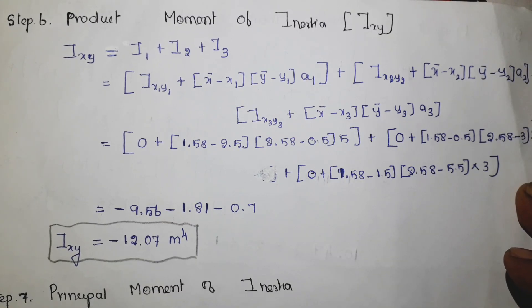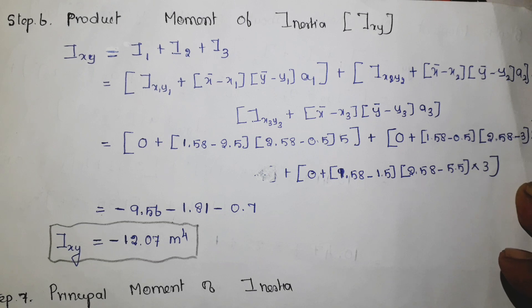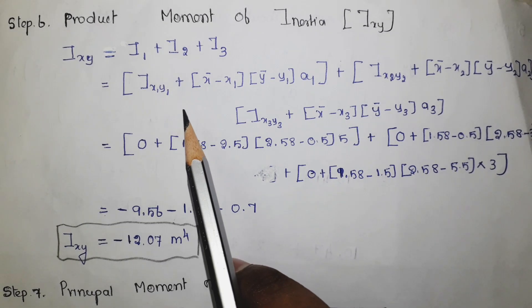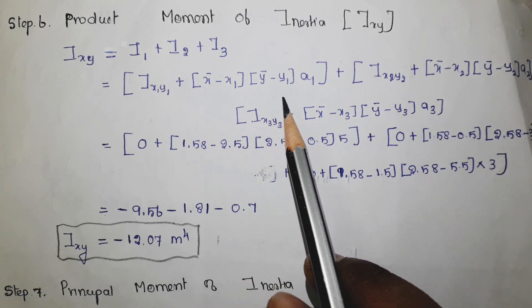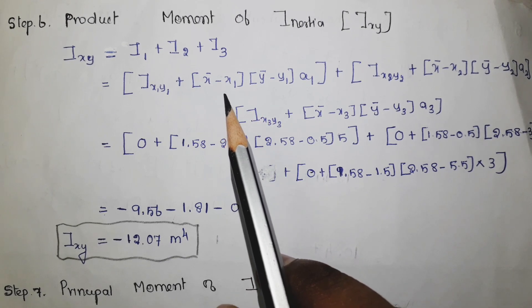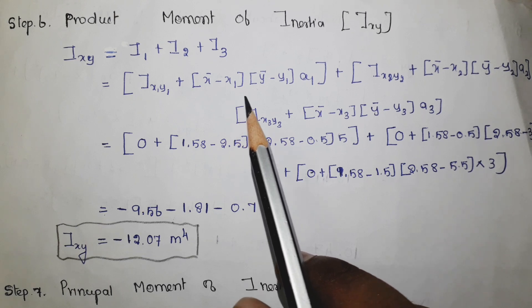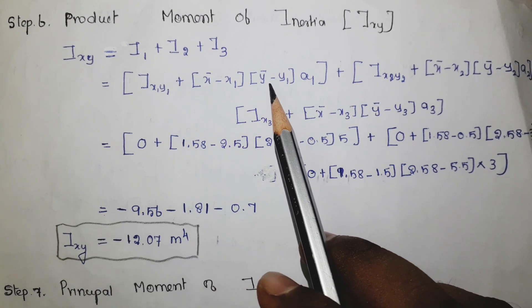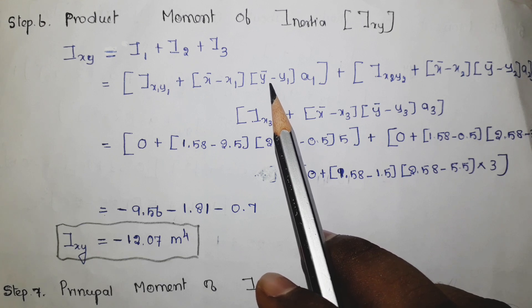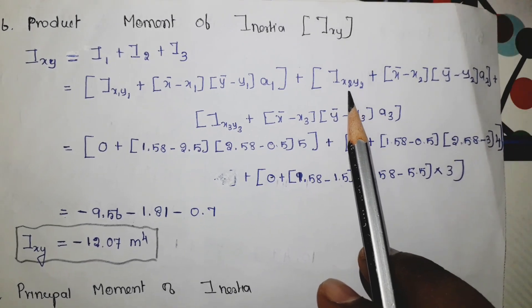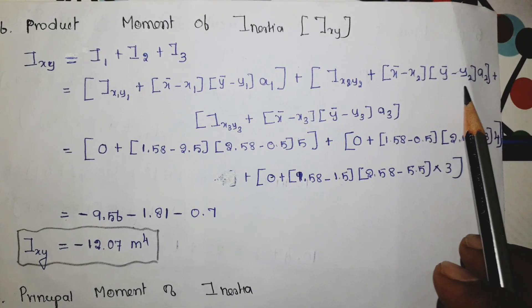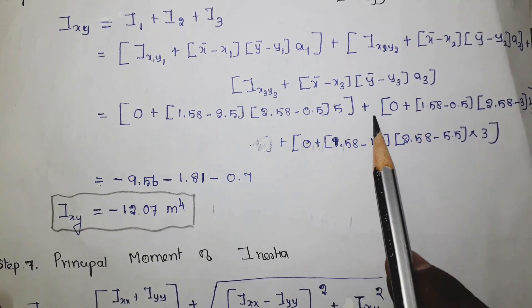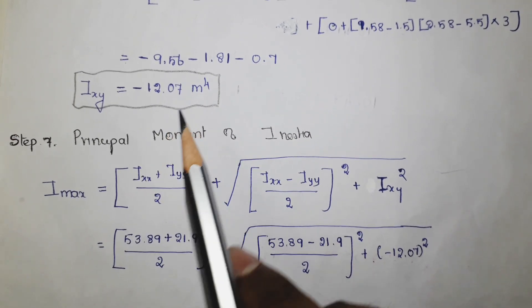Step 6 is finding the product moment of inertia about the centroidal axis. The formula is modified as Ix1y1 plus a1 into (x-bar minus x1) into (y-bar minus y1). These two distances are between capital G — the centroid of the composite section — and small g, the centroid of rectangle 1, in the y and x directions. The same is applied for the second and third rectangles with x2, y2, (x-bar minus x2), (y-bar minus y2), a2, and similarly for x3, y3. Substituting all values gives the answer as minus 12.07 meter to the power 4.